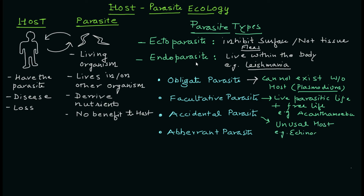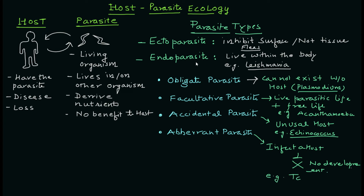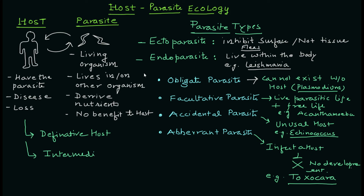An accidental parasite occurs when a parasite gets an unusual host that is not part of its normal life cycle. For example, in Echinococcus granulosus, the main host is the dog. If it enters humans, then humans become the accidental host and the parasite becomes an accidental parasite for humans. An apparent parasite — for example, Toxocara — cannot live or develop further if it enters the wrong host.